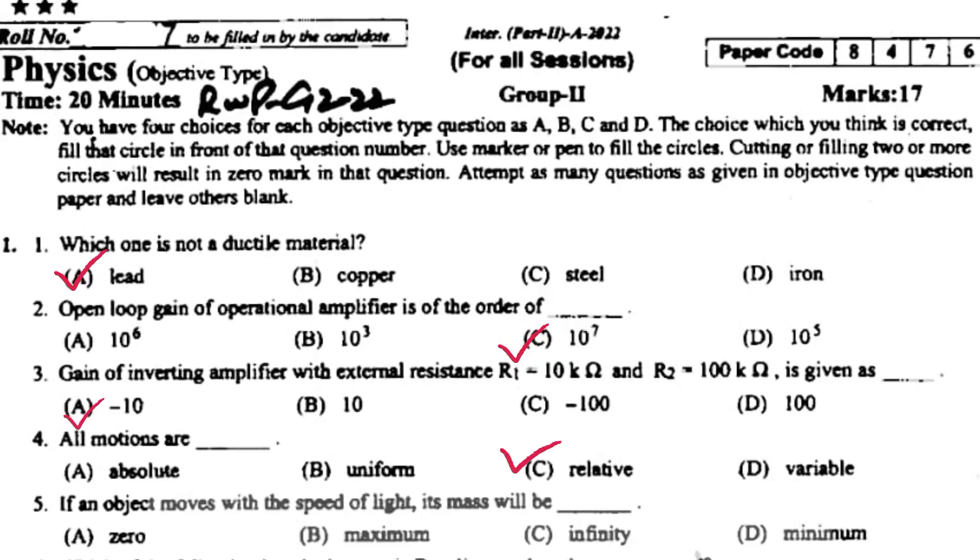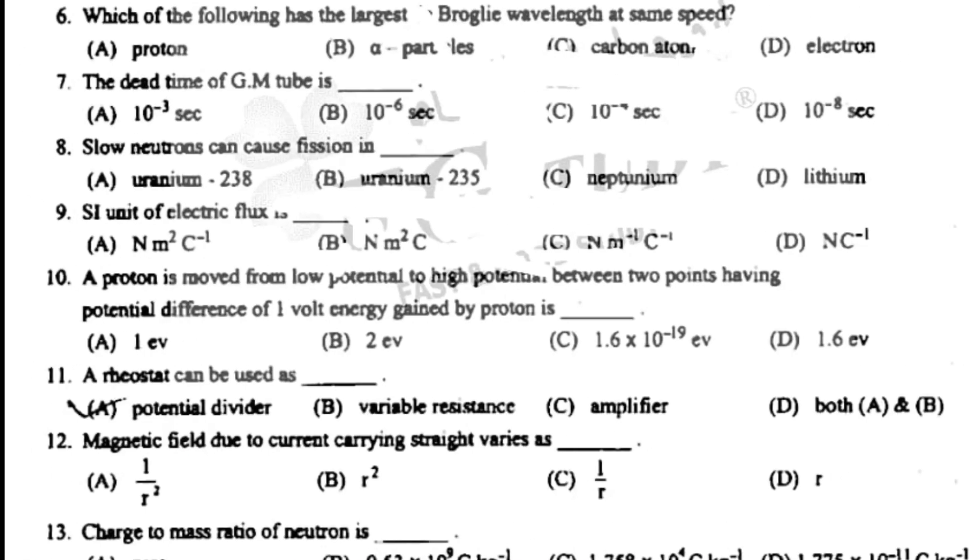All motions are relative. If an object moves with the speed of light, its mass will be infinity. Which of the following has the largest de Broglie wavelength at same speed? Electron.